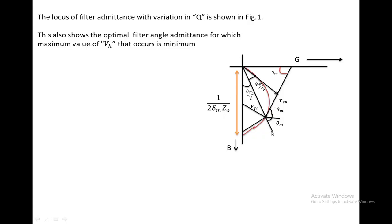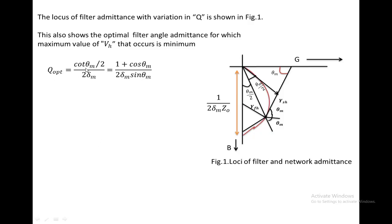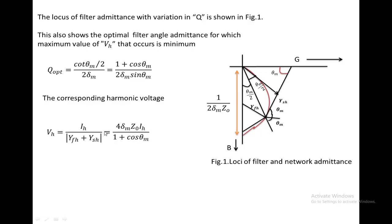Extending this line and drawing a parallel to the x-axis, the angle theta_M appears on both sides. From this locus of admittance by varying Q, we can find the optimal Q value, which equals cot(theta_M/2) divided by 2·delta_M. This can also be written as (1 + cos(theta_M)) divided by (2·delta_M·sin(theta_M)). The harmonic voltage at the converter bus is then VH = IH / (YFH + YSH) = 4·delta_M·Z0·IH / (1 + cos(theta_M)).